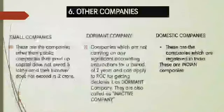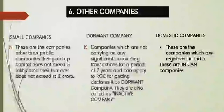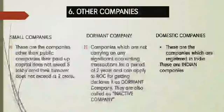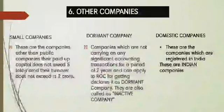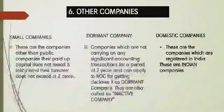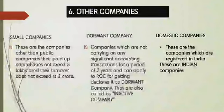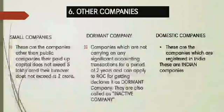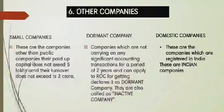The last classification is other companies — companies which are not classified under the above five bases. Some examples: a small company is one where the paid-up capital does not exceed rupees 50 lakhs and the turnover does not exceed rupees 2 crores.